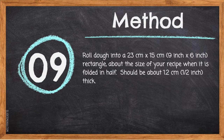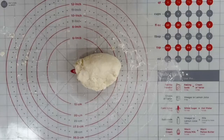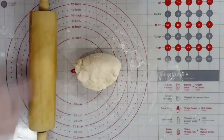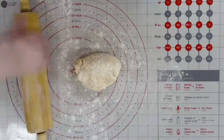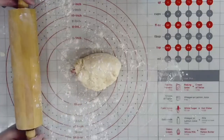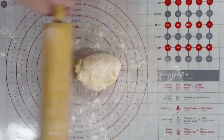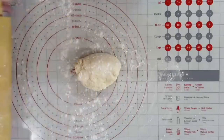Step 9: Roll dough into a 23cm by 15cm (9 inch by 6 inch) rectangle, about the size of your recipe when folded in half. It should be about 1.2cm (half inch) thick. When rolling out the dough, sprinkle a little flour on top so it doesn't stick to the rolling pin, and dust the rolling pin as well.